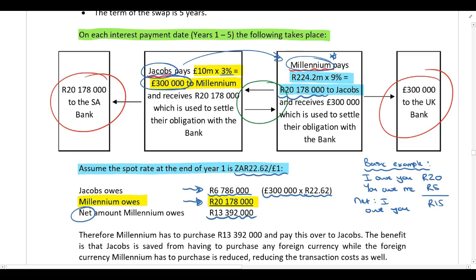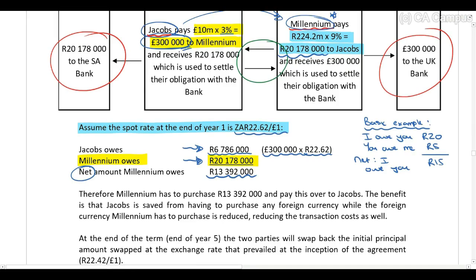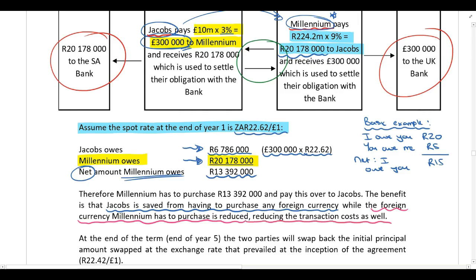Jacobs doesn't have to go to their bank at all to exchange money for pounds, because the net effect is that Millennium actually owes Jacobs. The benefit is that Jacobs is saved from purchasing any foreign currency to pay Millennium. From Millennium's perspective, the amount they need to convert into foreign currency is also reduced — they only go to their bank for the net amount, converting fewer pounds into rands. This results in savings for both companies.